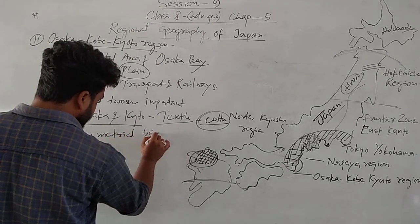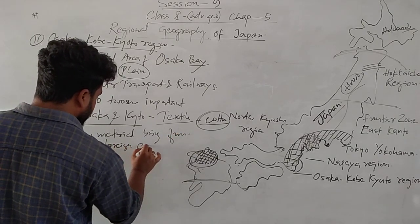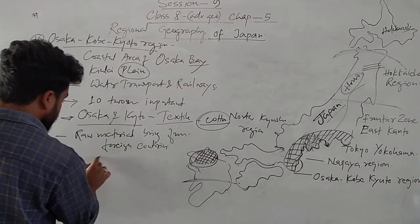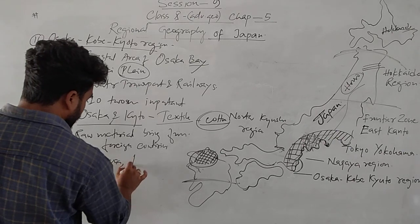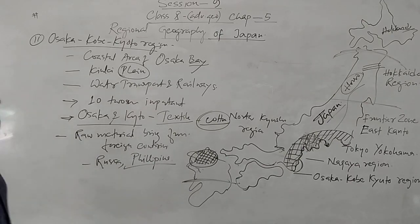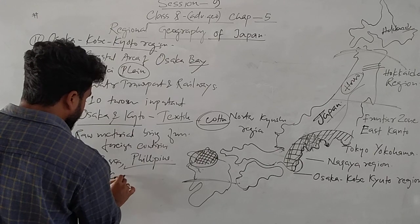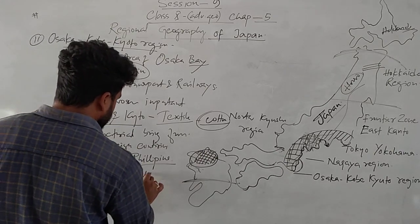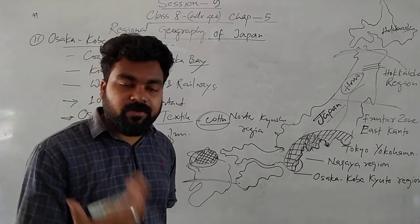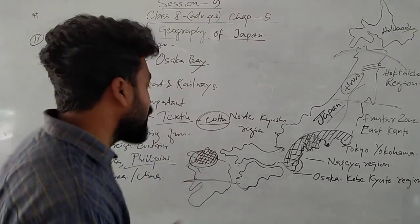The raw materials are brought from neighboring foreign countries. Countries near Japan include Russia, the Philippines, Korea — both North and South — and China. The Philippines is developed in rice and cotton cultivation. These neighboring countries provide raw materials to Japanese companies, which then produce goods and export them to other countries.